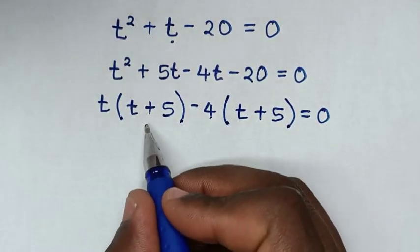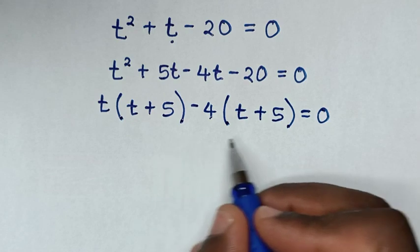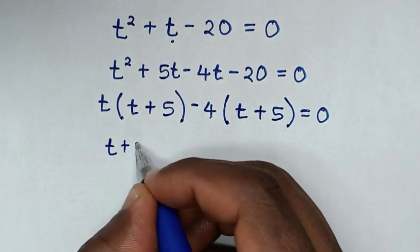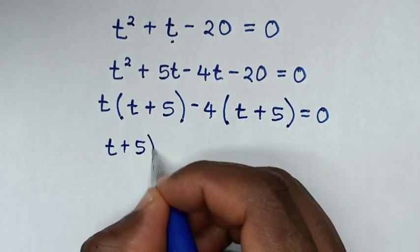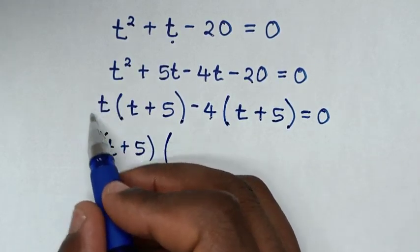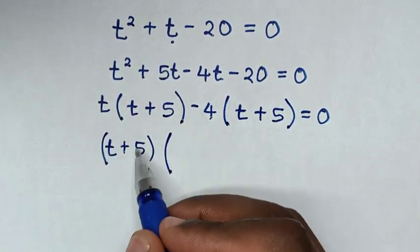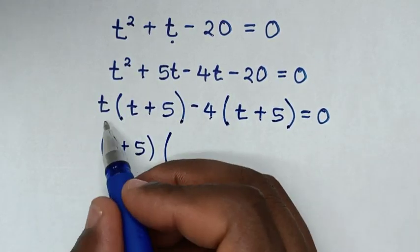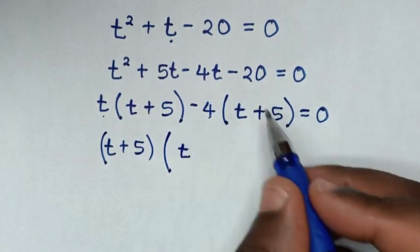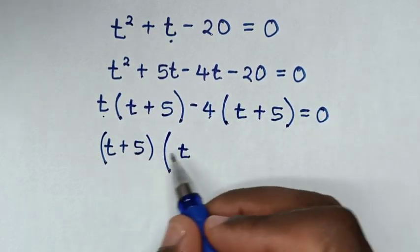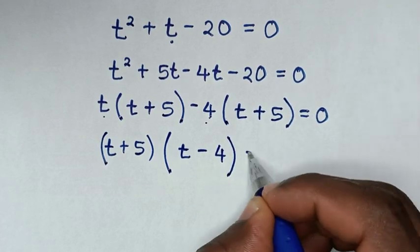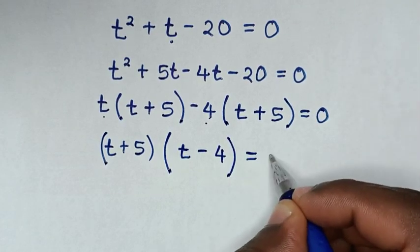From here, t plus 5 is common. So we take (t plus 5) bracket out. Then this divided by this is t, and this divided by this is negative 4, bracket, is equal to 0.